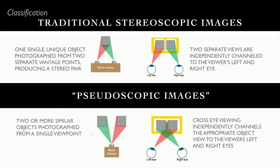With traditional stereoscopic images, it's an object — you're taking two pictures of one object from two separate vantage points. Then you combine them, either through a viewer or however you do it. You're independently channeling the image to your left eye and your right eye and forming a stereoscopic image in your head.